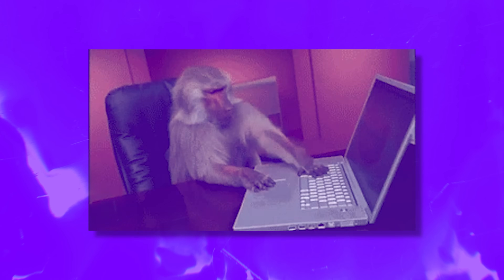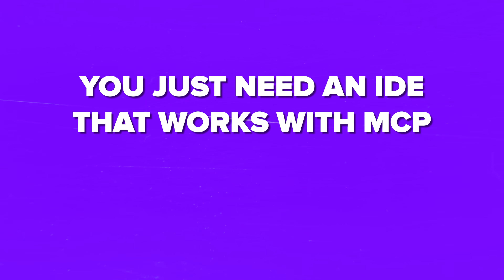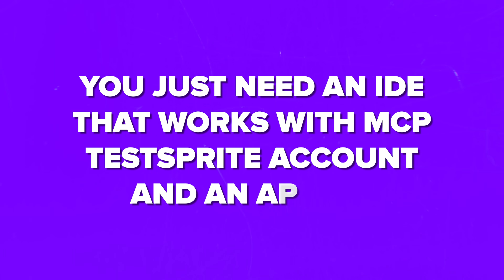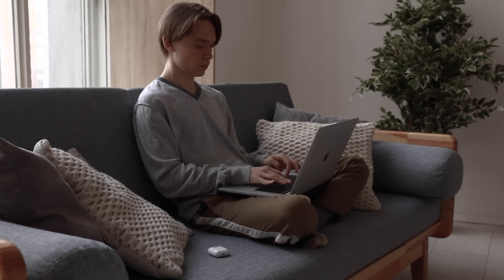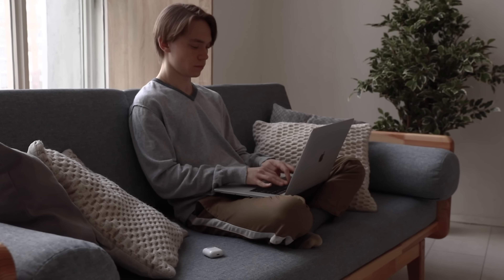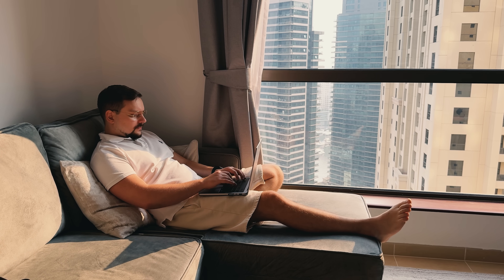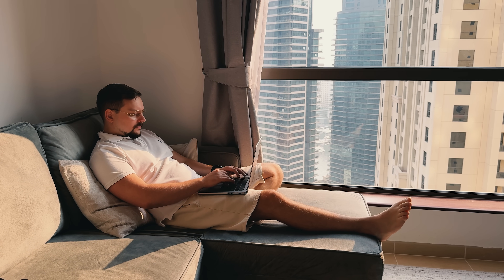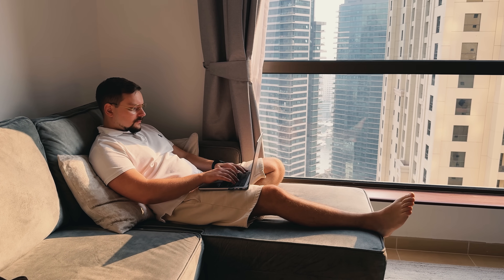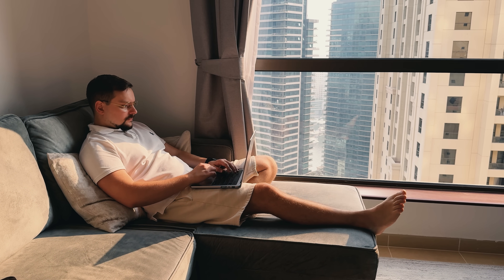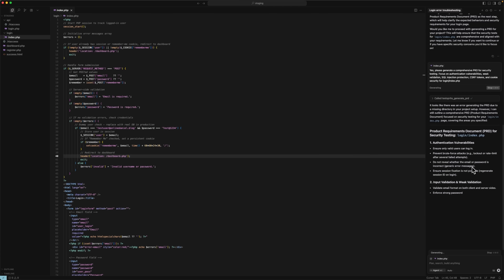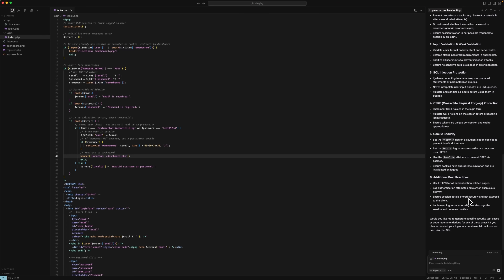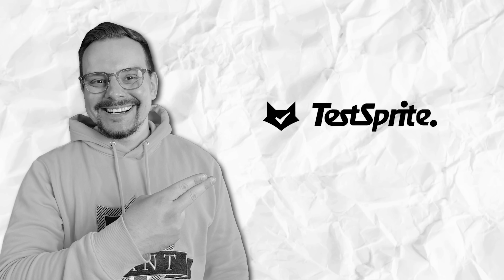Setting it up is pretty simple. You just need an IDE that works with MCP, a TestSprite account, and an API key to connect everything. Once that's done, the whole process kind of takes care of itself. It's a smart way to turn your AI code into real working software without spending hours debugging. You code like usual, your AI assistant writes stuff, and TestSprite quietly makes sure it doesn't break.